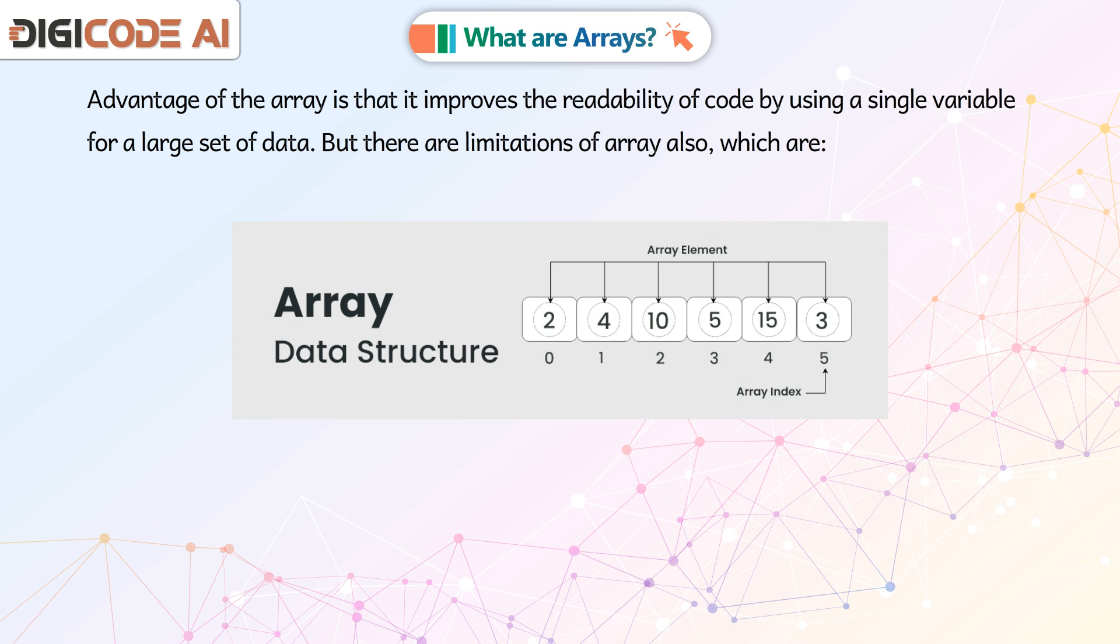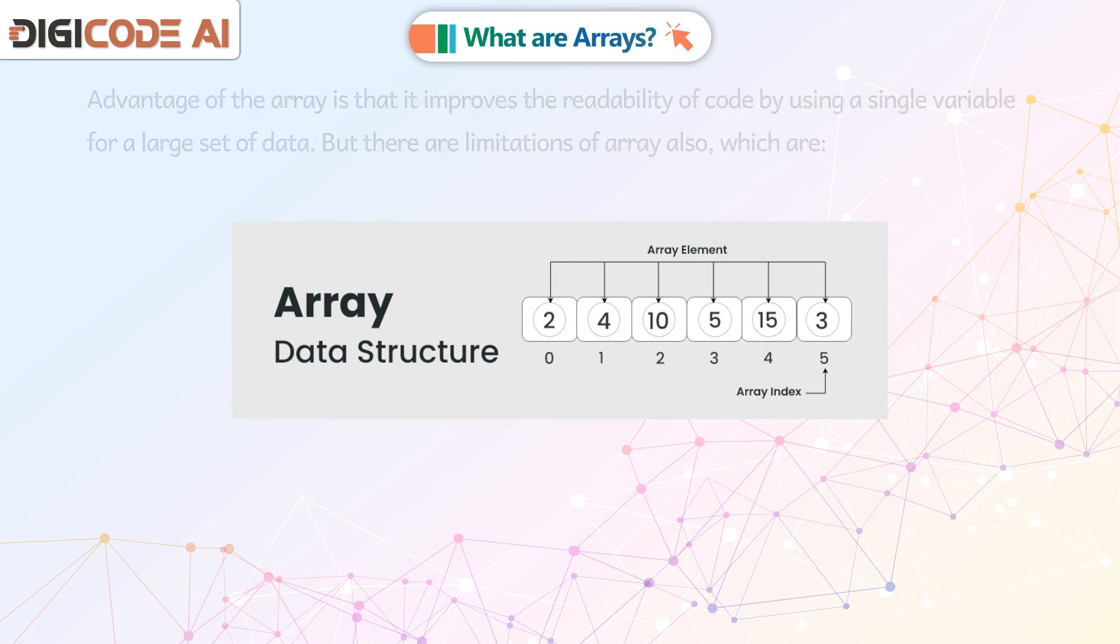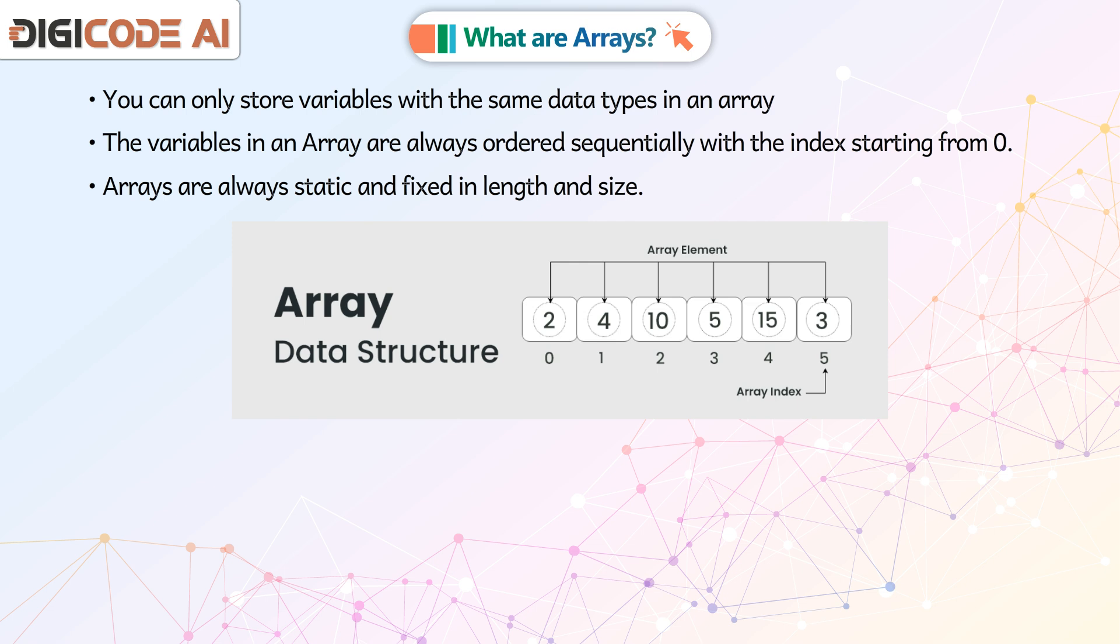But there are limitations of arrays also, which are: You can only store variables with the same data types in an array. The variables in an array are always ordered sequentially with the index starting from 0. Arrays are always static and fixed in length and size.